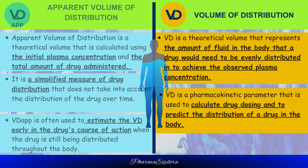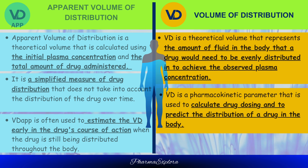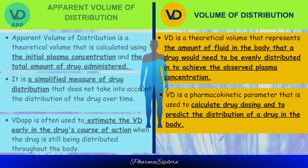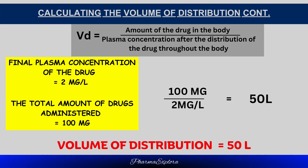The volume of distribution, on the other hand, is a theoretical volume representing the amount of fluid the drug would need to be evenly distributed in to achieve the observed plasma concentration — the hypothetical volume into which the drug has distributed throughout the body. For example, with a drug administered intravenously at 100 mg and an initial plasma concentration of 10 mg/L, the apparent Vd is 10 liters. As the drug distributes and the plasma concentration falls to 2 mg/L, the volume of distribution is calculated to be 50 liters — demonstrating that Vd is a more accurate measure as it accounts for distribution over time.